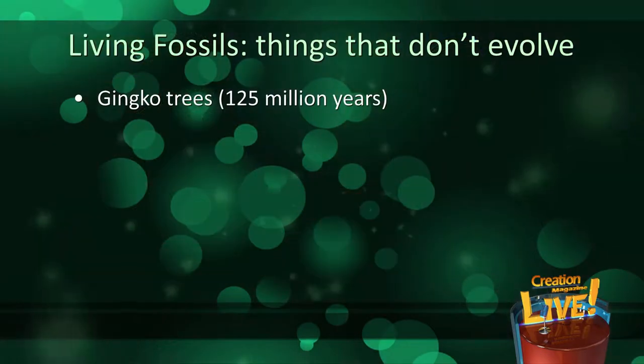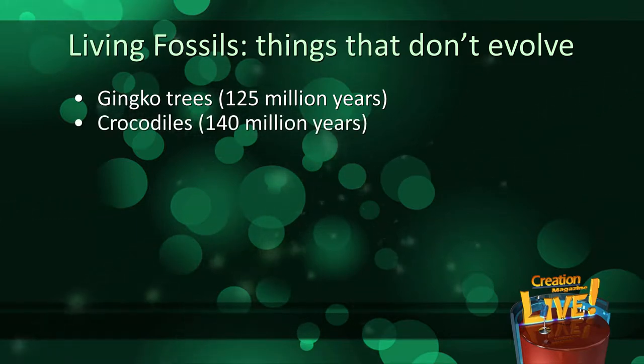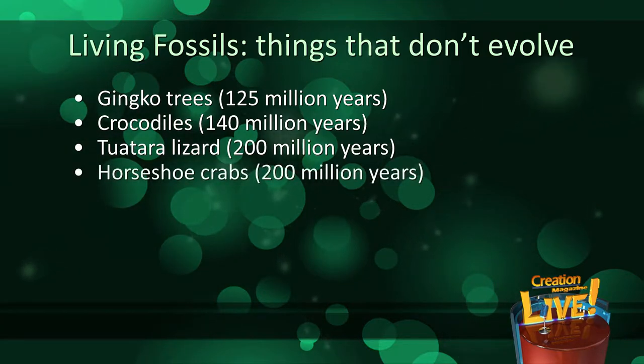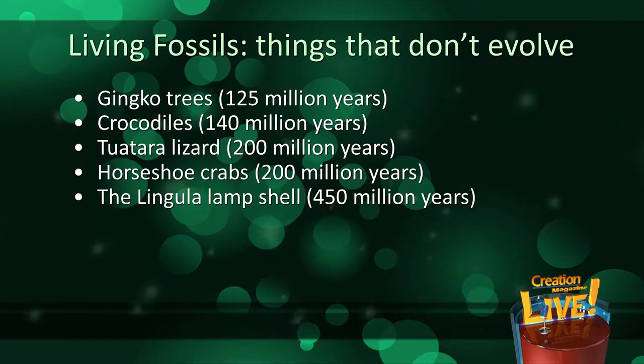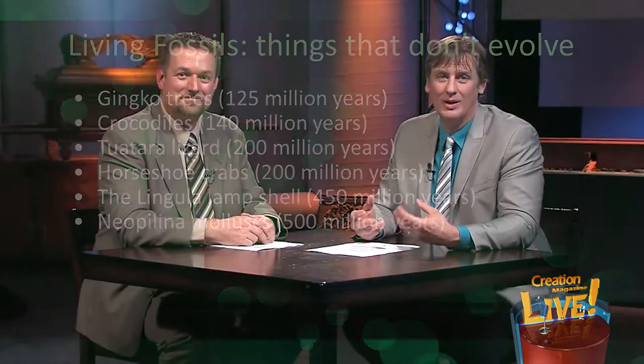We did an entire episode on this last year called Fossil Mix-Ups — you can view it at creation.com/CML4-16. And living fossils are another massive problem for evolutionists, but no problem if there was a global flood. There are fossilized plants and animals that look identical to those living today: Ginkgo trees supposedly 125 million years old, crocodiles 140 million, Tuatara lizard 200 million, horseshoe crabs 200 million, the Lingula lampshell supposedly 450 million years old, and Neopilina molluscs supposedly 500 million years old — no change in 500 million years. There are still many examples of zero evolution over these supposed millions of years, but it fits with a global flood.